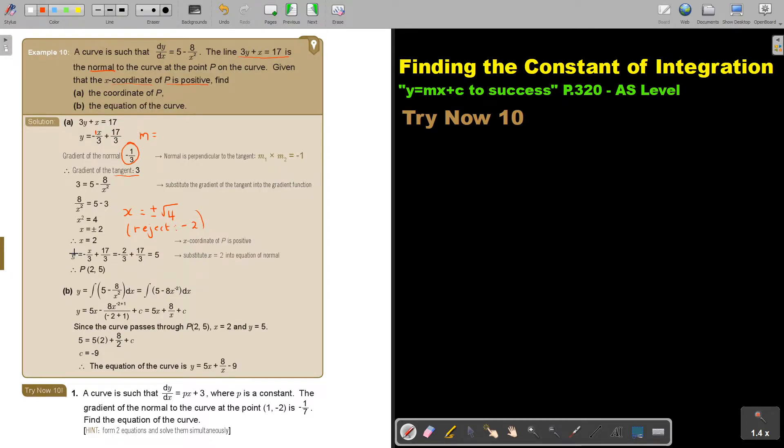Now, what do I want to do? Find the coordinate of P. Now substitute x equals 2 into the equation of the normal, and I get the value of y is 5. Because remember, the normal passes through point P. Can I just show you on a sketch here?